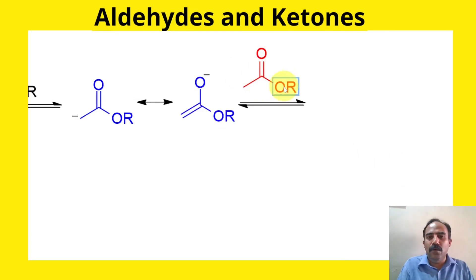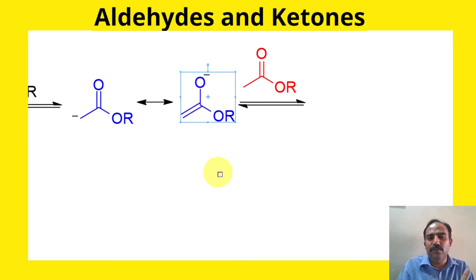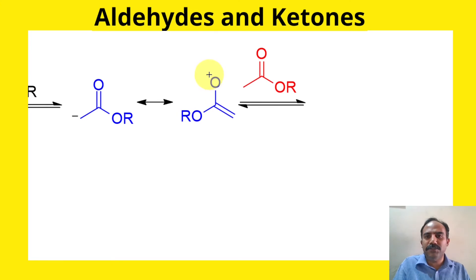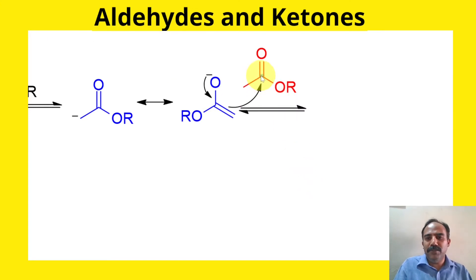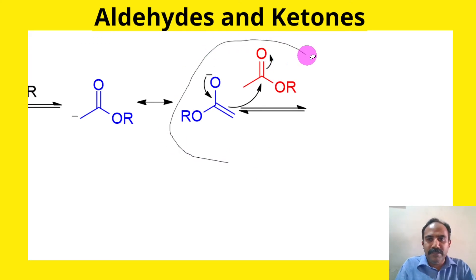Let us draw another molecule of the same ester. The enolate attacks this ester. The two electrons on the enolate oxygen form a new bond between that oxygen and the carbonyl carbon of the ester. The old pi bond of the enolate breaks, and those electrons make a new bond between the alpha carbon and the ester's carbonyl carbon. At the same time, the ester's carbonyl pi bond breaks, giving oxygen a negative charge.